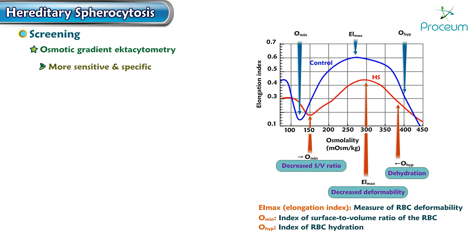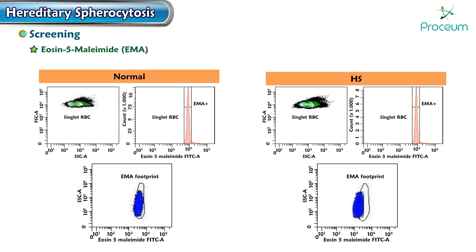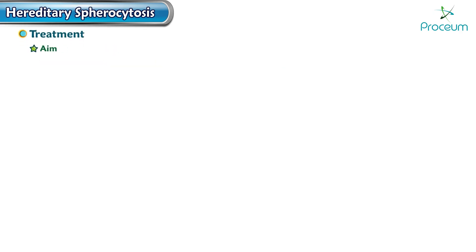Ektacytometry is more sensitive and specific than the osmotic fragility test for diagnosing hereditary spherocytosis and can reliably detect it in newborns. Eosin-5-maleimide (EMA) binding to erythrocytes is a flow cytometry-based method also used for the diagnosis of hereditary spherocytosis.